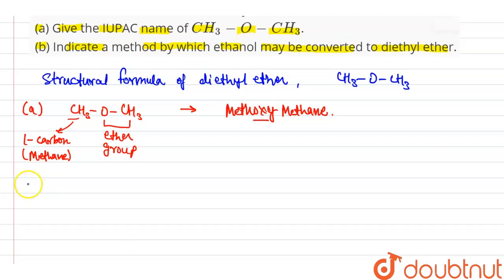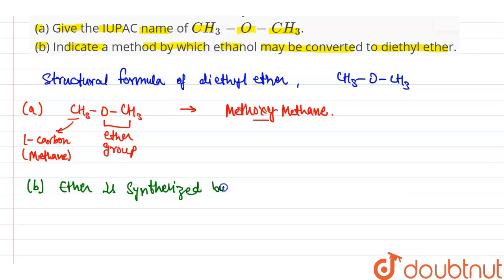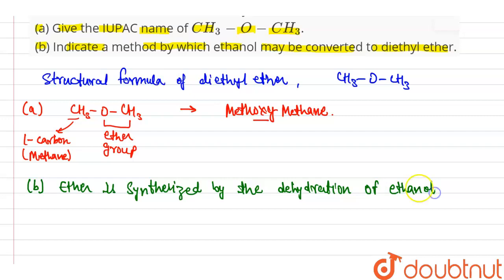Now for option B, we indicate a method by which ethanol may be converted to diethyl ether. Diethyl ether is synthesized by the dehydration of ethanol using sulfuric acid, H2SO4.